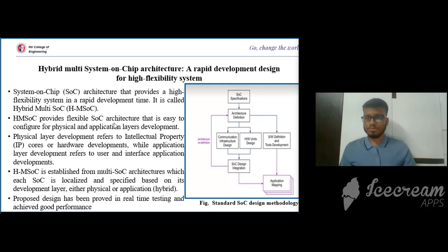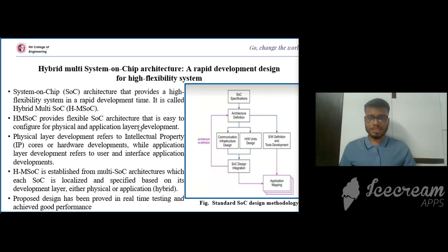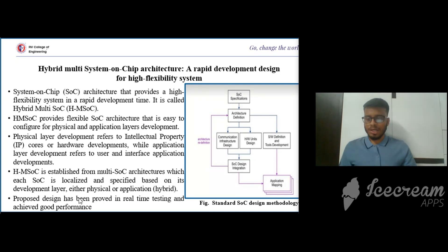A multi-hybrid system-on-chip architecture is a rapid development design for a highly flexible system. It provides flexible SoC architecture that is easy to configure for physical and application layer development. The physical layer development refers to IP or intellectual property cores or hardware developments, while application layer development refers to user and interface application developments. The hybrid SoC is established from multi-SoC architectures where each SoC is localized and specified based on its development layer, either physical or application, and the design has been used in real-time testing achieving good performance.